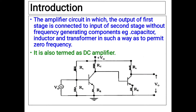Direct coupled amplifier circuits are those types of amplifier circuits in which the output of the first stage is directly connected to the input of the second stage without frequency-generating components — for example, capacitors, inductors, and transformers. We are directly connecting the output of the first stage to the input of the second stage without using any coupling devices, so as to permit zero frequency signals. These circuits are also known as DC amplifier circuits.